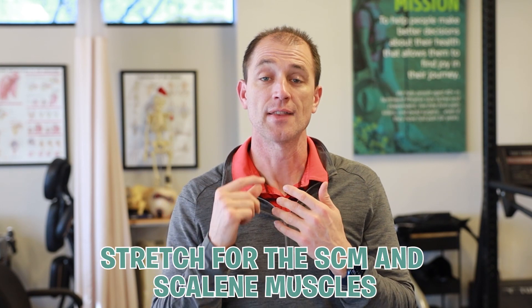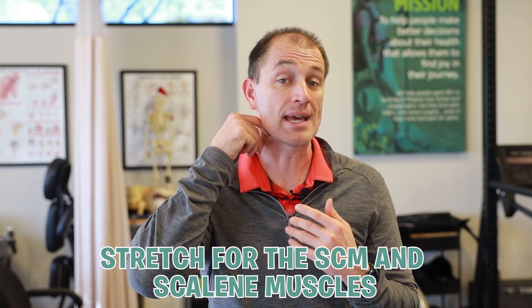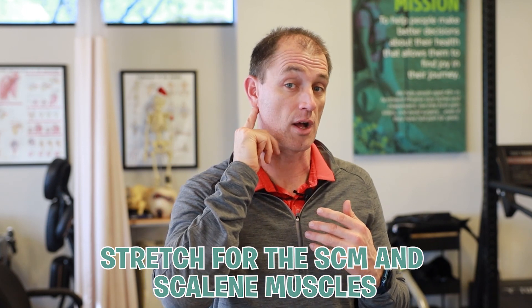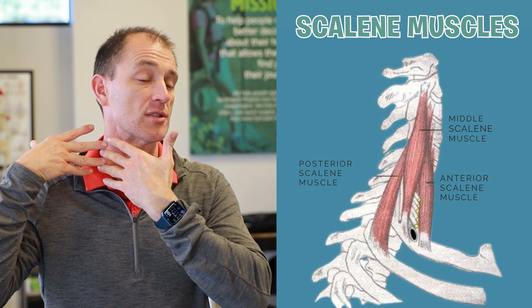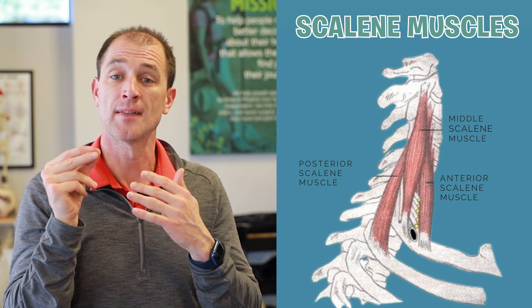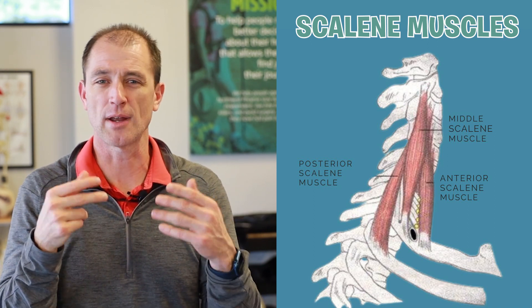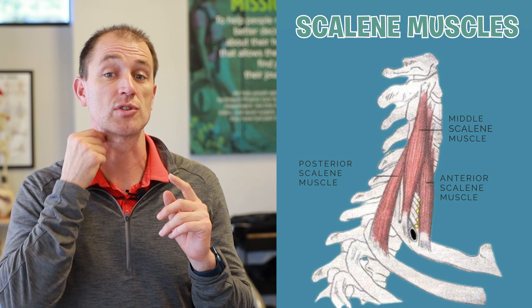The next technique is a stretch for the SCM and scalene muscle. The SCM is the thick banded muscle that goes from the mastoid process just behind the ear down to the SC joint, which incorporates the collarbone and sternum. The scalene muscle is a wide, thin muscle across the front of the neck that assists our big movers. This area is commonly associated with triggering headache pain and can be hard to stretch.